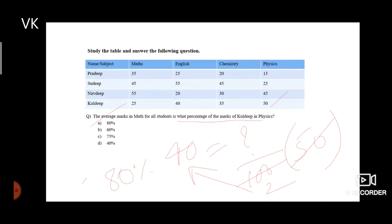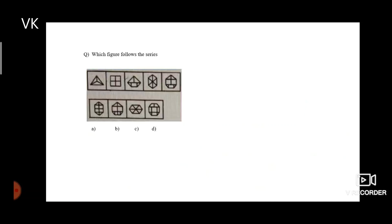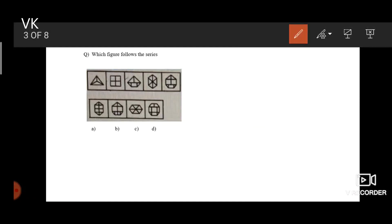Let's move on to the second question. Which figure follows the series? So when you observe this keenly, this is a very easy question. The first one has three sides which means it is a triangle. It is increased by one side in the second figure and increased by one side.